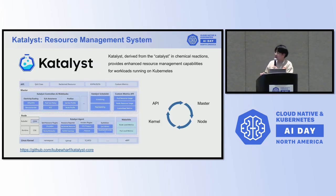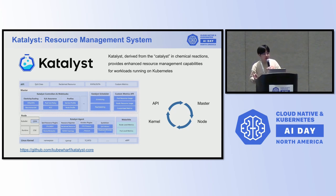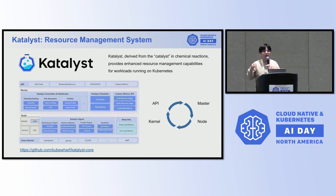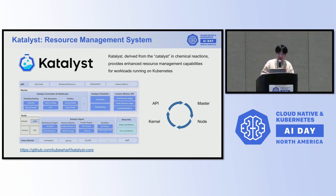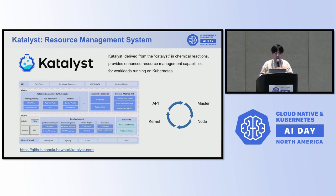To achieve fine-grained resource management capabilities, we have incubated a resource management system called Catalyst. The name Catalyst is derived from the word catalyst in chemical reactions, and it symbolizes its ability to provide enhanced resource management capabilities for all workloads running within the Kubernetes ecosystem.